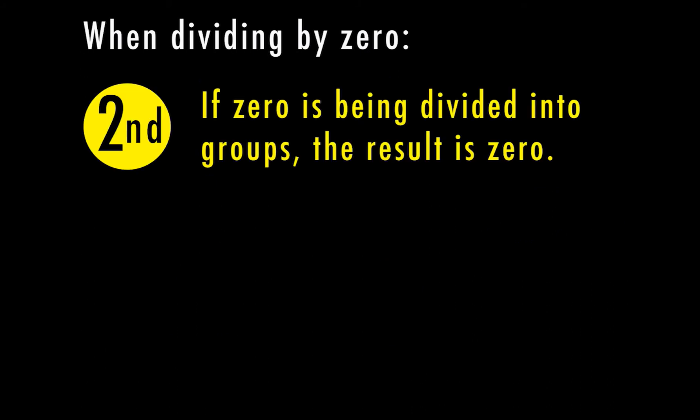Let's talk about the next step here. What if zero is being divided into groups? Well, in that situation, zero is in the numerator, so it's going to be a result of zero. Let's look at a couple of examples for this.